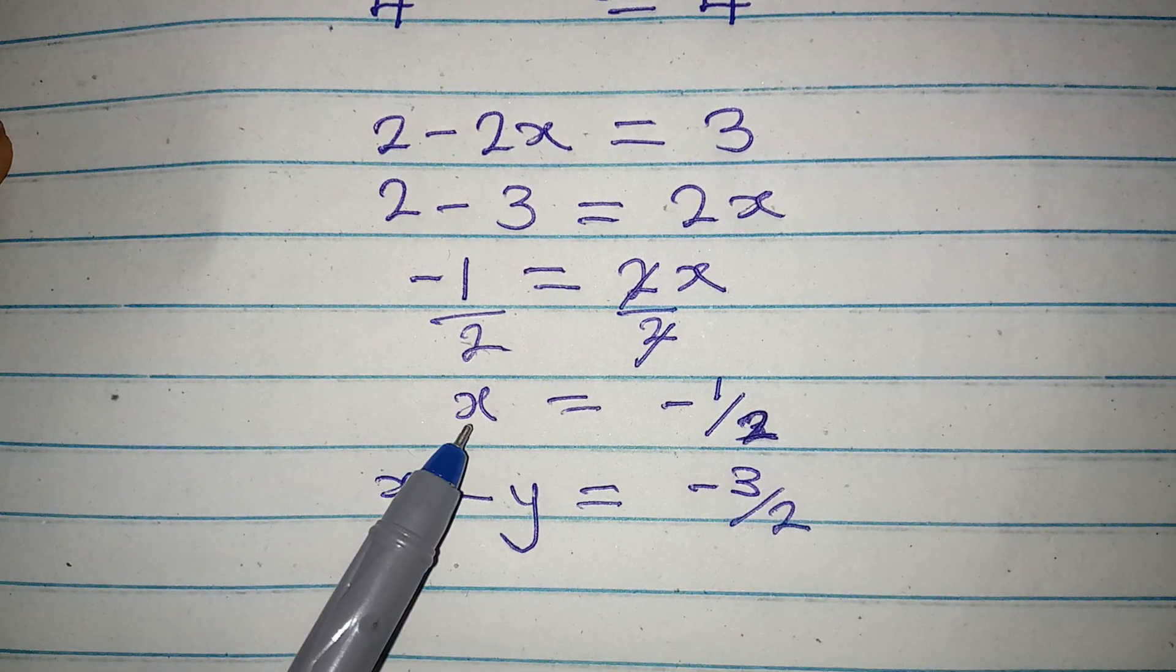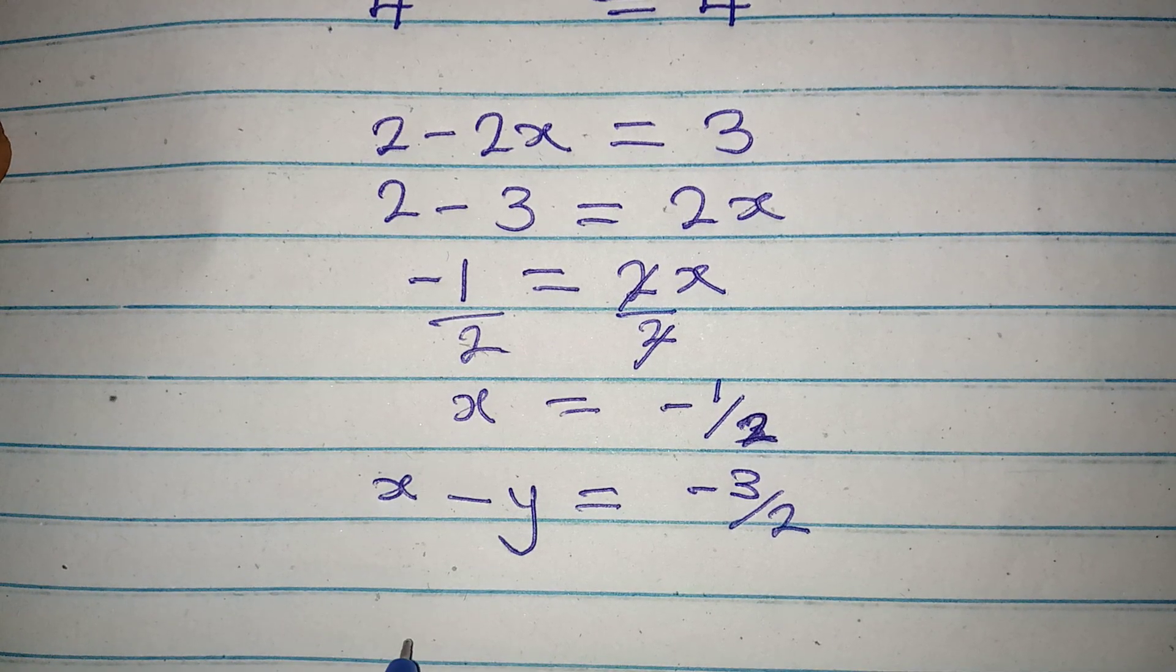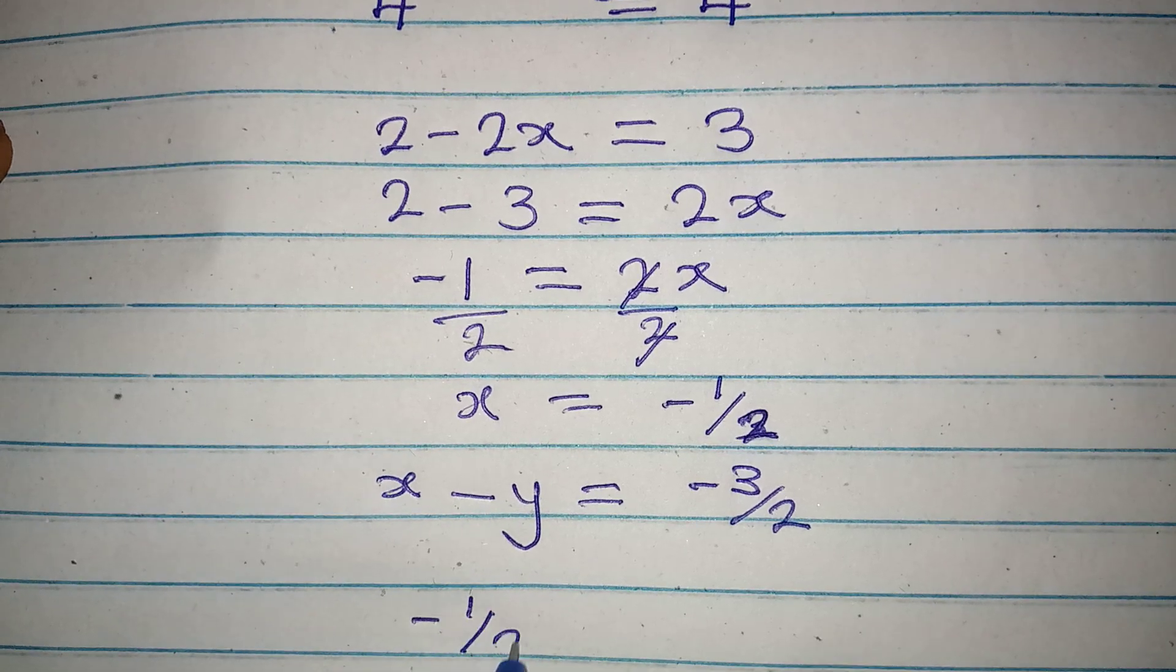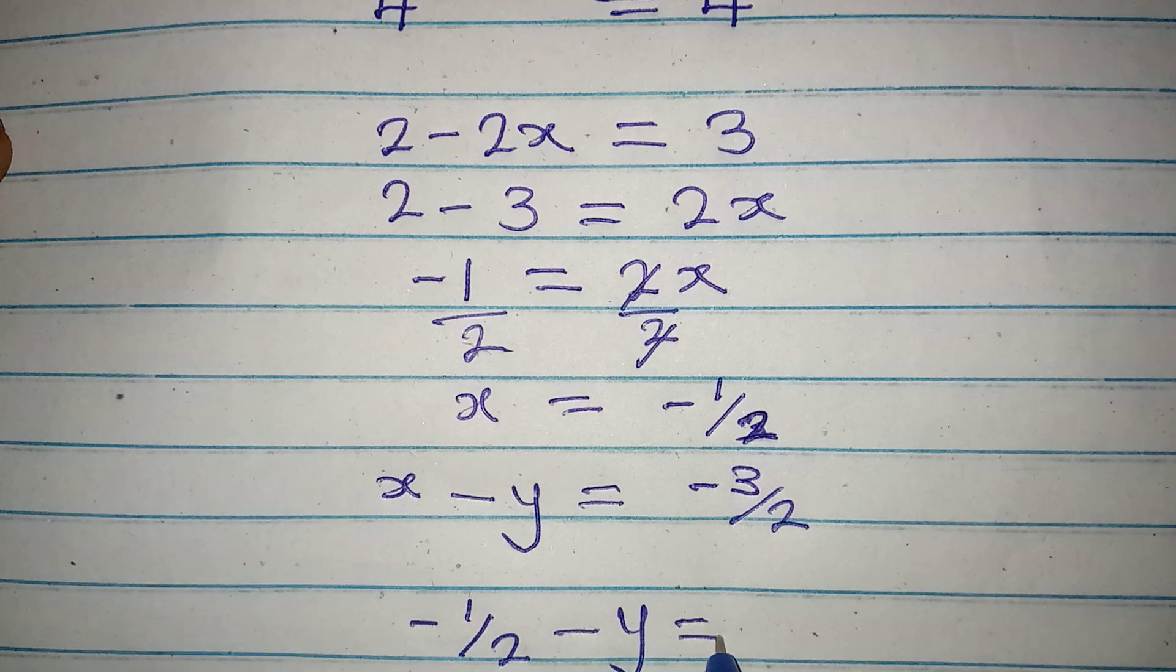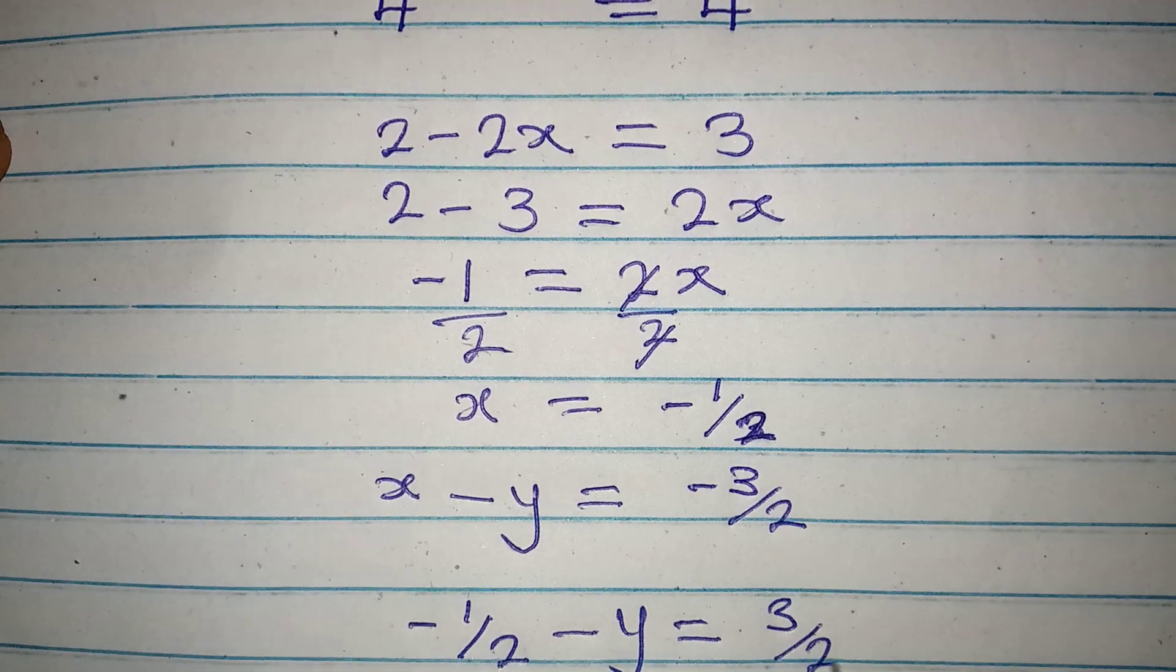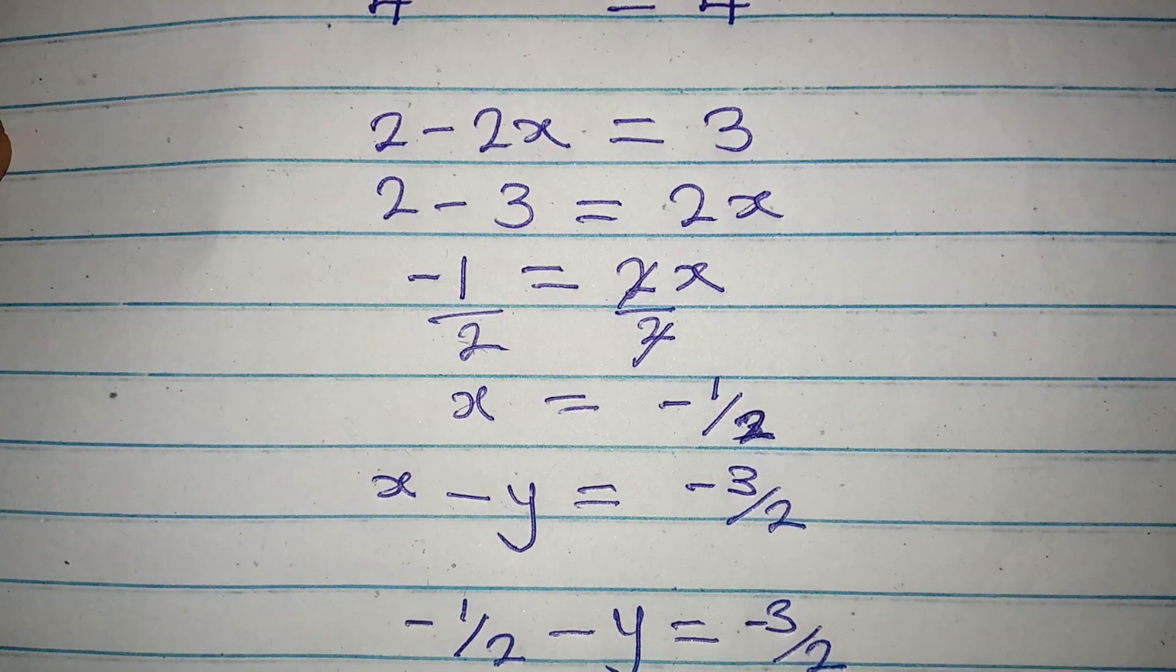And now we have the value of x. So put it in there. So we have minus 1 over 2, that is for x. Then minus y equal to 3 over 2. But this is negative 3 over 2.